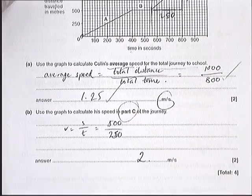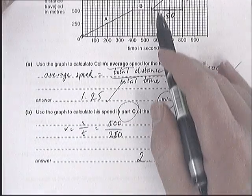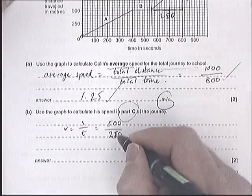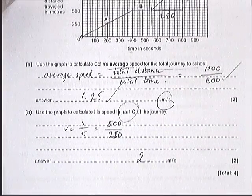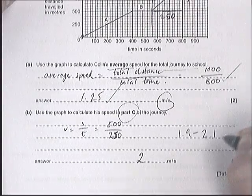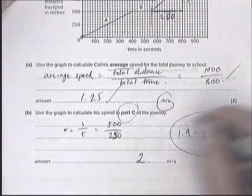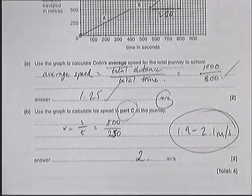Now, I'll just say that if you've read it off, it's difficult to read it exactly as 250 off the graph. It might be slightly inaccurate there, in which case anything from 1.9 to 2.1 metres per second was acceptable for this answer for two marks.